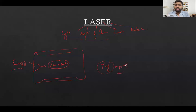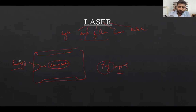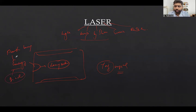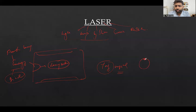YAG is the lasing medium. It has crystals which release photons. The energy source — which can be a flash lamp or a diode — releases energy to activate the lasing medium. When the lasing medium is activated, the atoms which have electrons in a stable phase receive energy, and these electrons are excited to higher orbits.